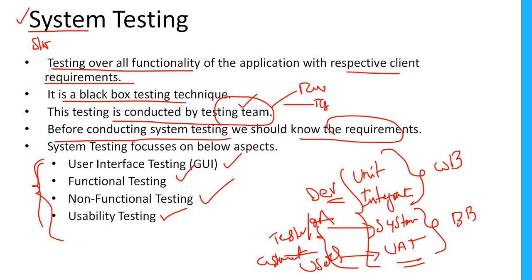To summarize: system testing means testing the overall functionality of the application with respect to customer requirements. It is a black box testing technique, conducted by the testing team, and before conducting it we should know the requirements completely. We are going to discuss functional testing and non-functional testing in detail in the coming sessions.